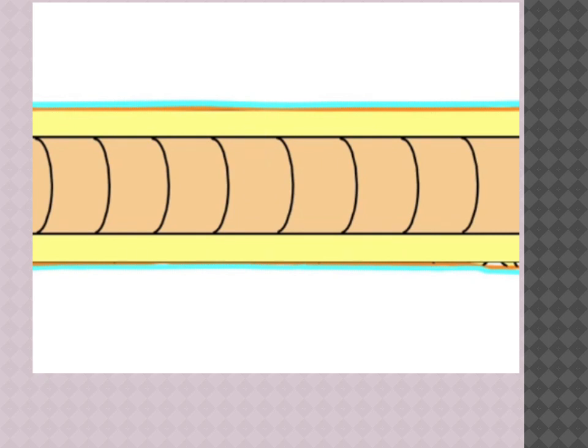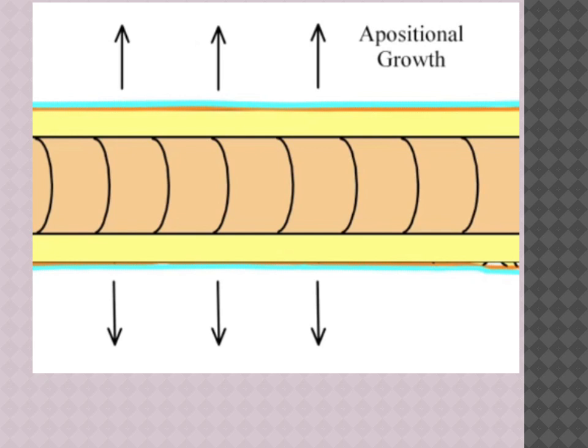The final structure of completed bones includes the outermost layer of connective tissue known as the periosteum. The innermost portion of the periosteum is composed of fibrous connective tissue. In this tissue, more osteoblasts can be produced, allowing the bone to grow in width. This is known as appositional growth.